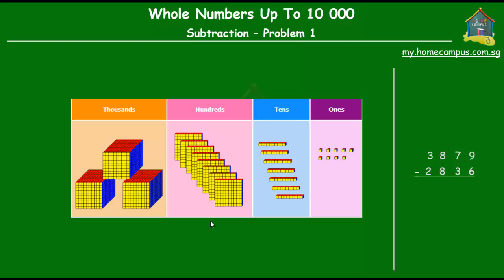From here I will subtract the smaller number which is 2836. Now the first step to subtracting numbers is to subtract the ones. There are 9 ones, and from the 9 ones we will subtract 6 ones. So on the place value chart here, if I subtract 6 ones from the 9 ones what do I have left? Well I have 3 ones left. So 9 ones minus 6 ones is 3 ones.